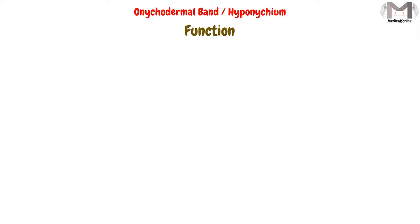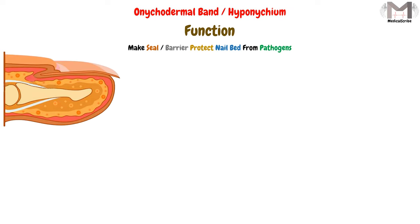The function of the onychodermal band and the hyponychium in general is to make a seal or barrier that protects the nail bed from pathogens, by preventing them from entering the nail bed.